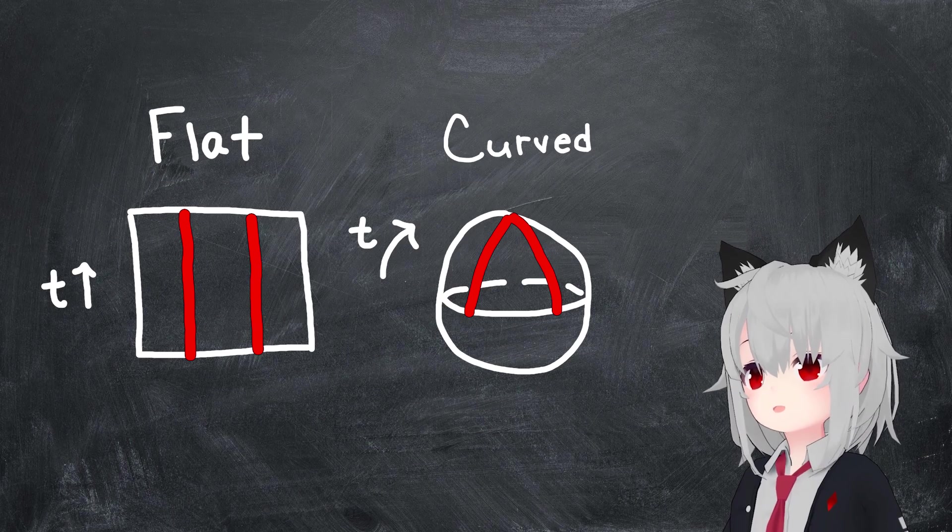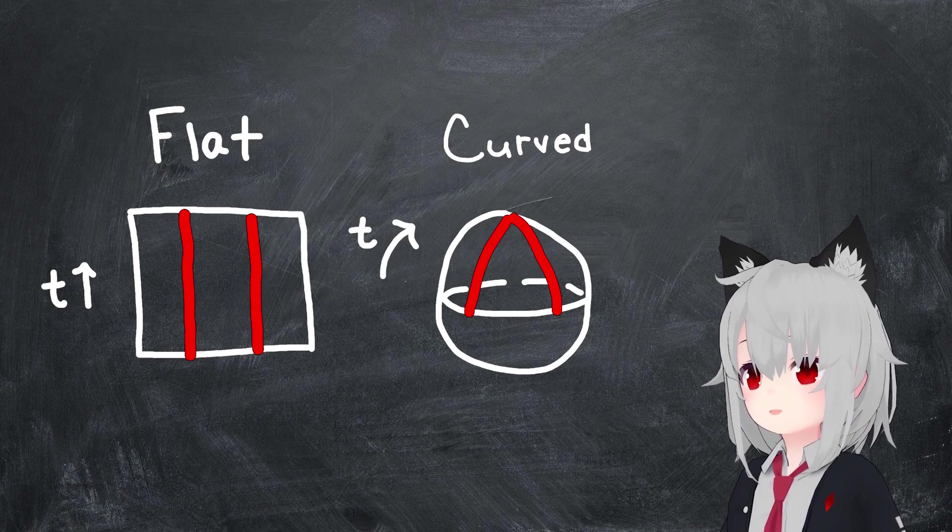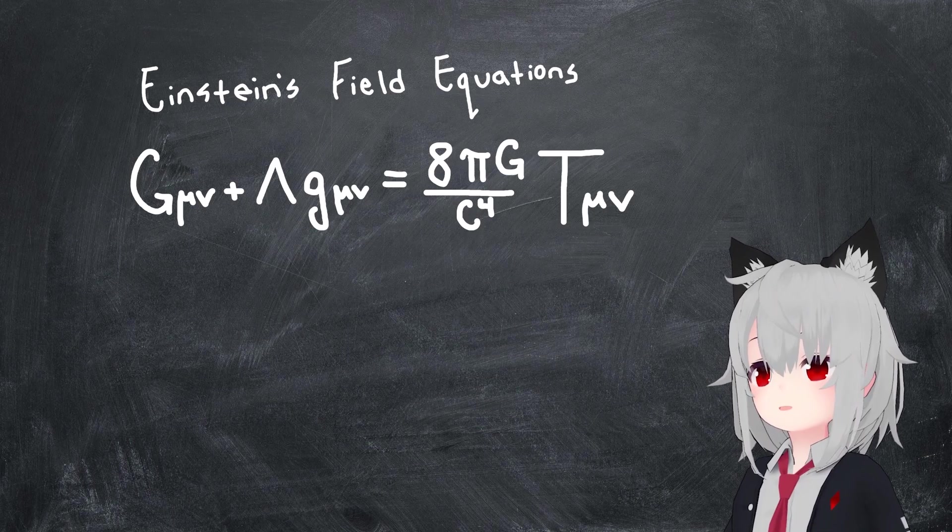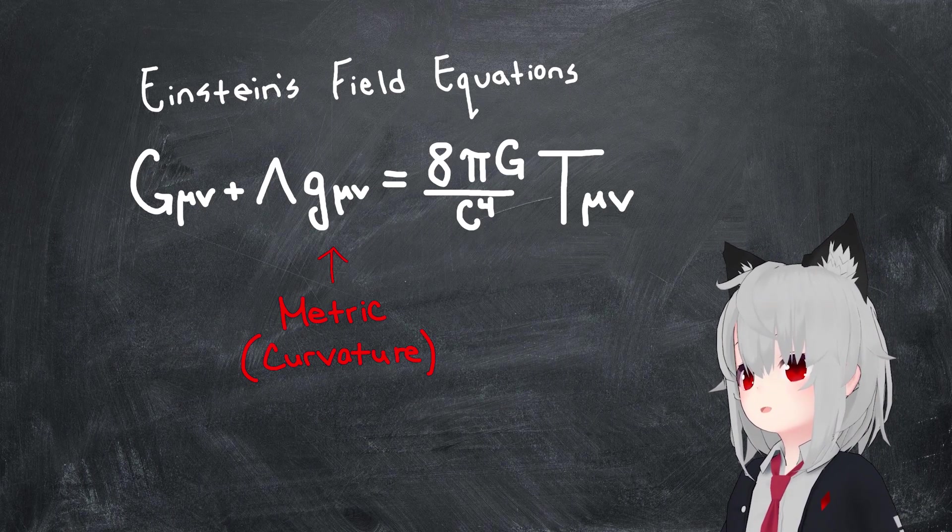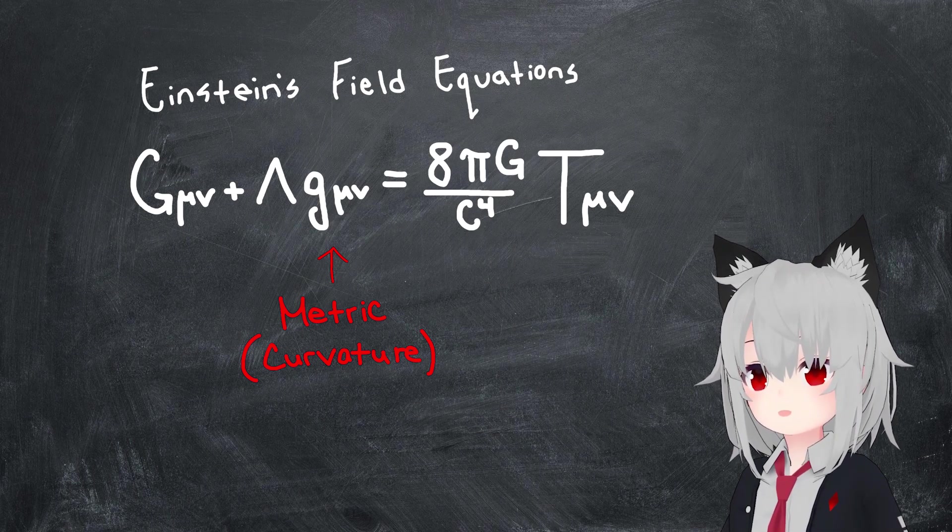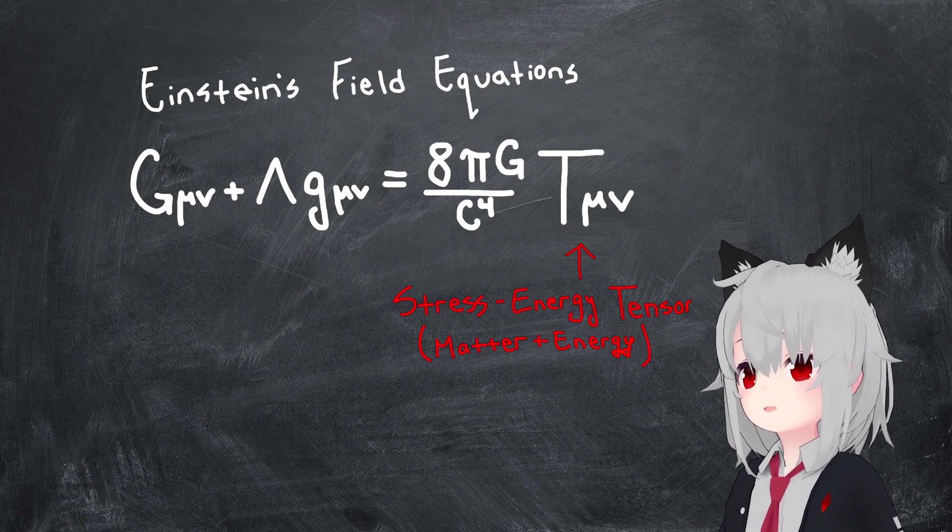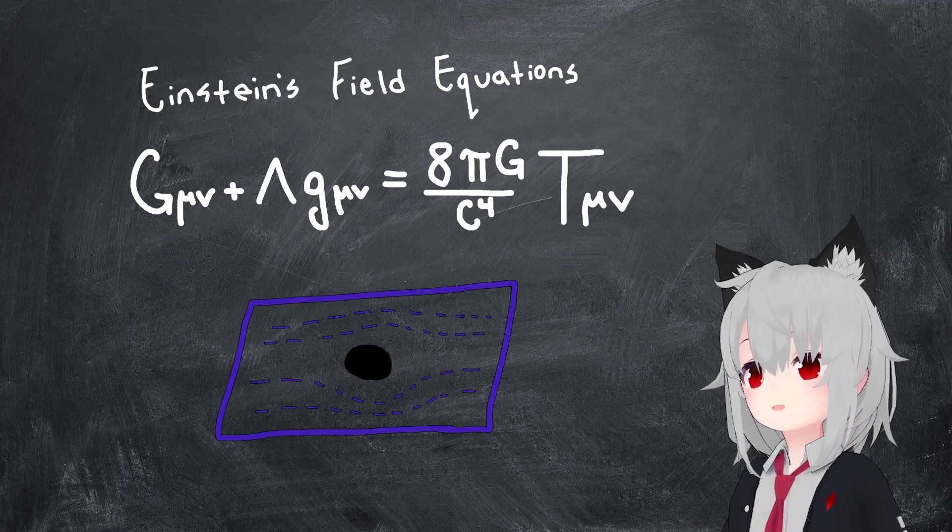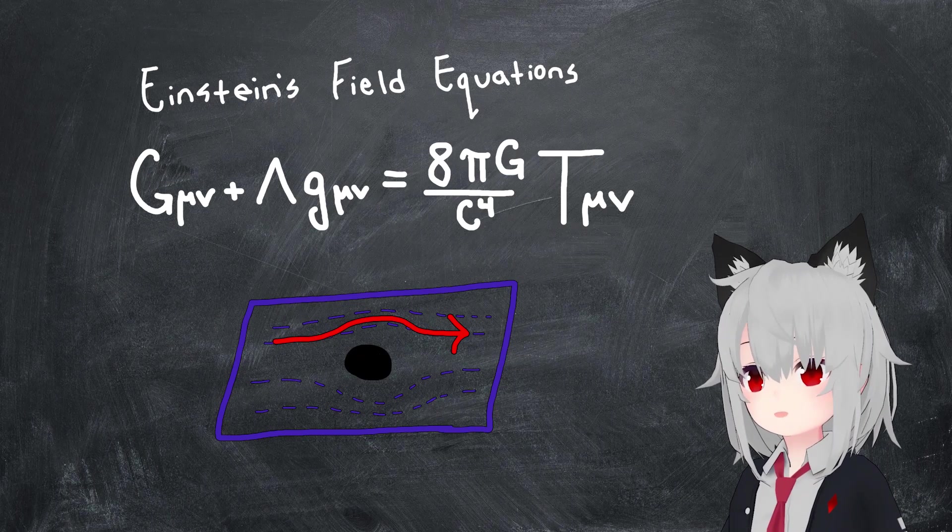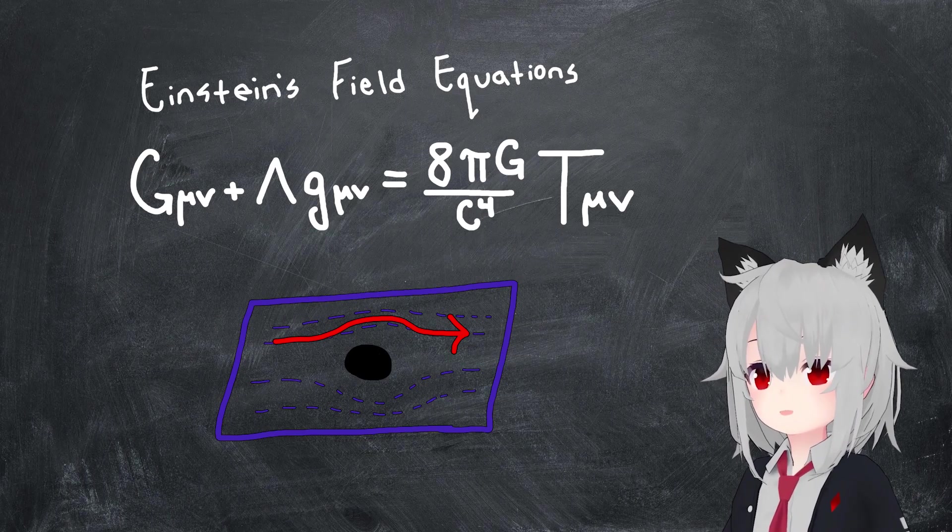In fact, it was Einstein who figured out exactly what this spacetime curvature should look like in order to emulate the gravitational force that we see. The answer is given by his field equations, and as expected, these equations define a relationship between the metric of the spacetime manifold, which is a mathematical object that gives information about its curvature, and the stress-energy tensor, which gives information about the distribution of matter and energy inside it. The resulting intuition is that matter and energy distort the spacetime manifold around them, modulating the paths of objects inside it and giving rise to what looks to us like a gravitational force.